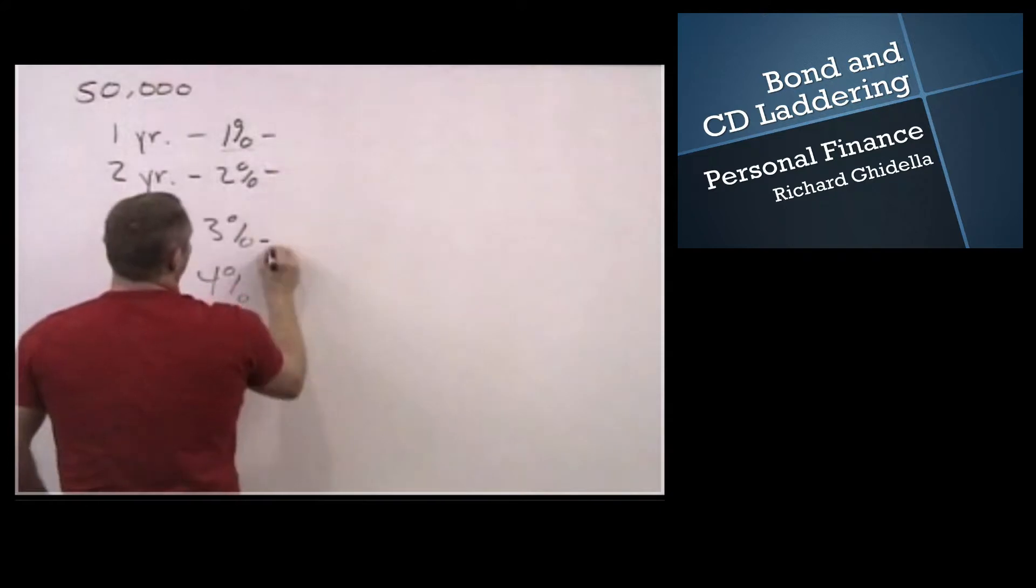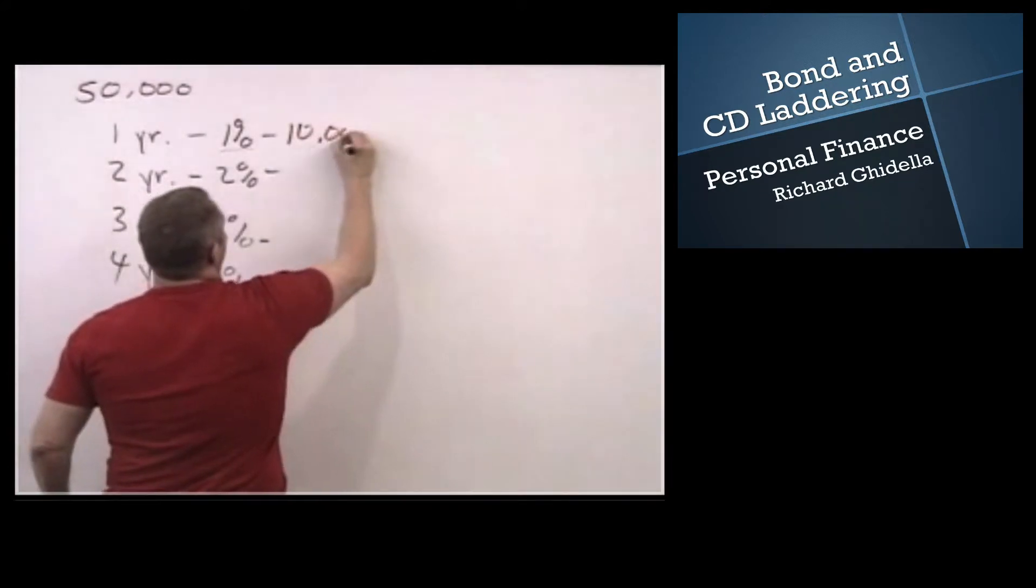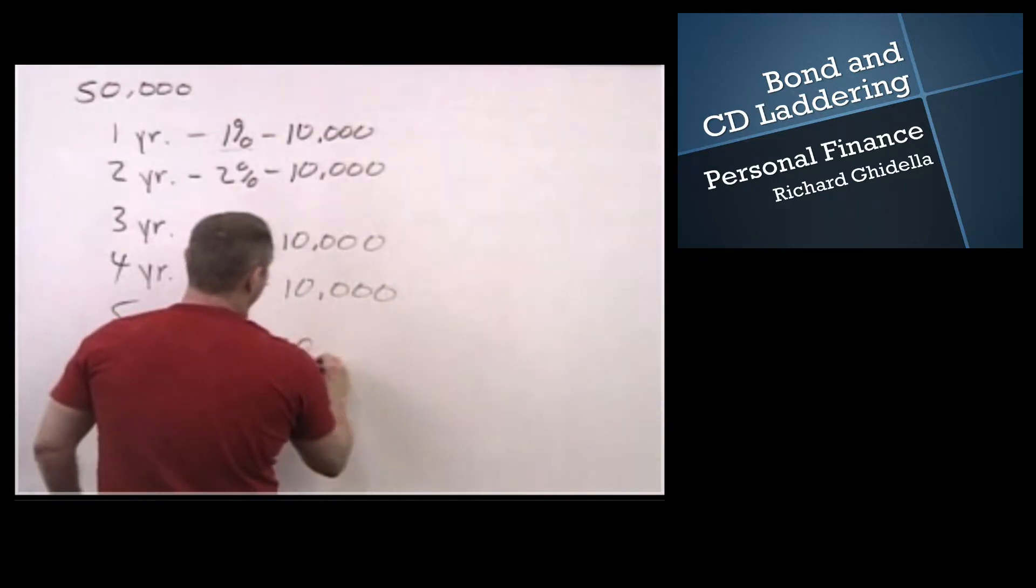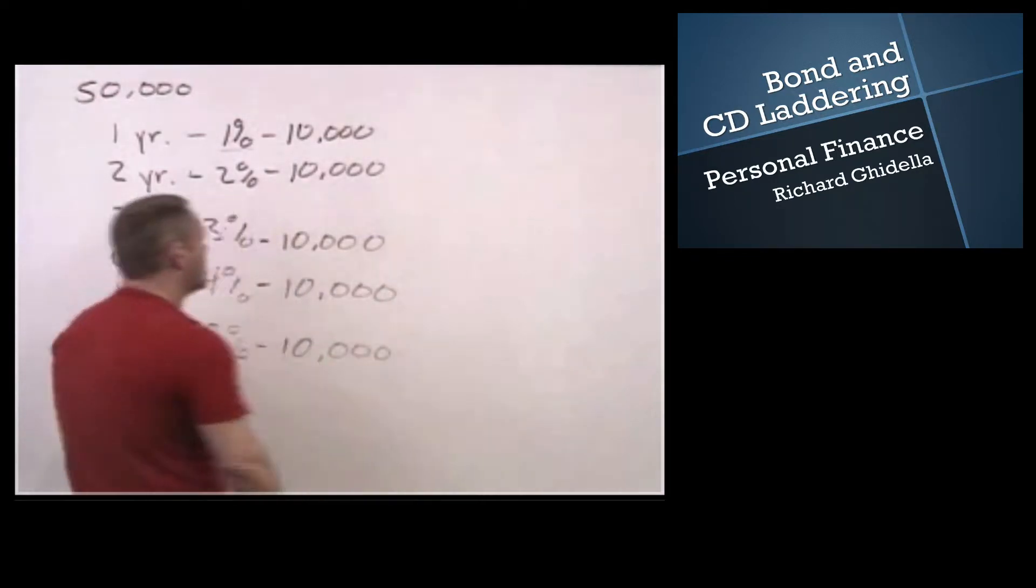And so for each of these, what we're going to do is deposit $10,000. And this really helps our flexibility, and we end up with an average yield of 3%.